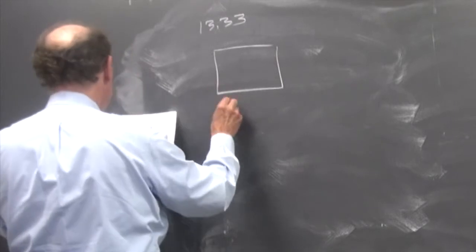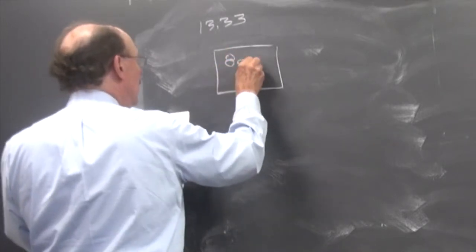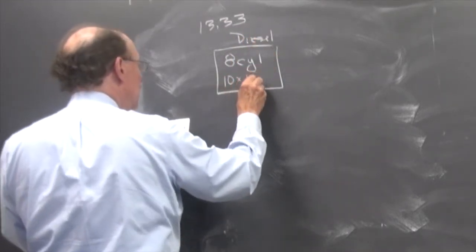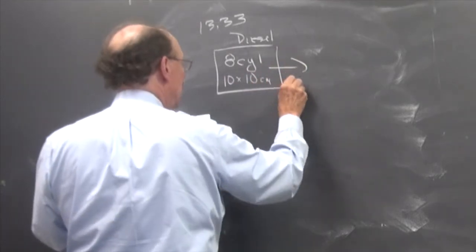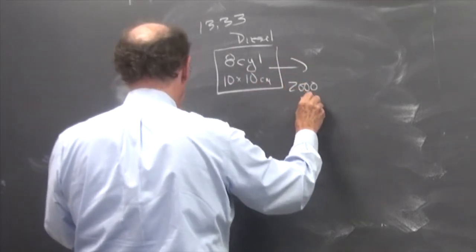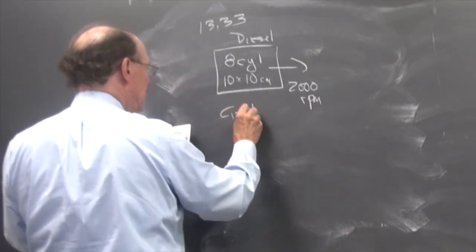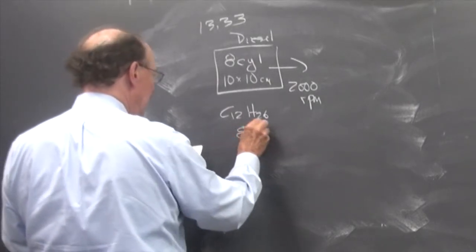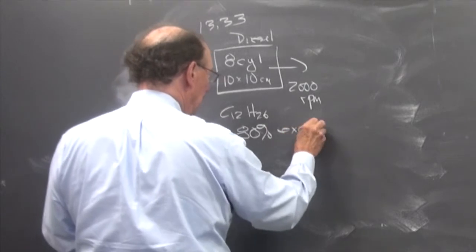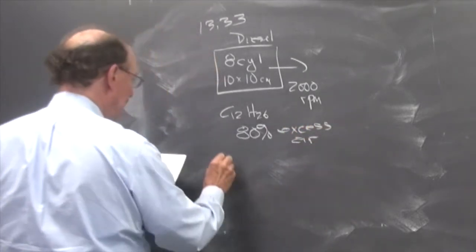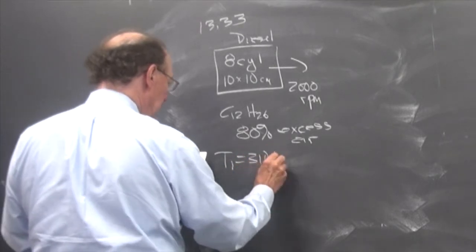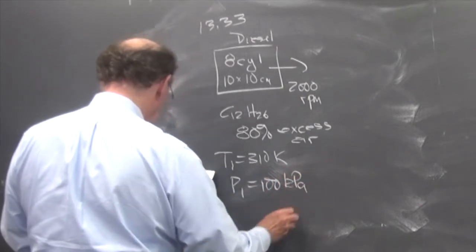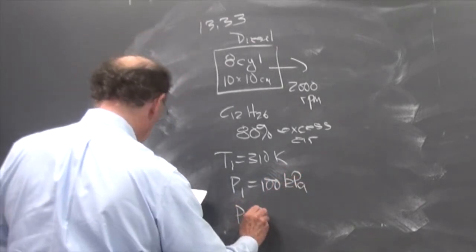So I have an 8-cylinder diesel, it's 10 by 10 centimeters, running at 2000 rpm, we're using C12H26, and we're going to use 80% excess air. We have the T1 is 310 Kelvin, P1 is 100 kPa, P2 is equal to 3 MPa.